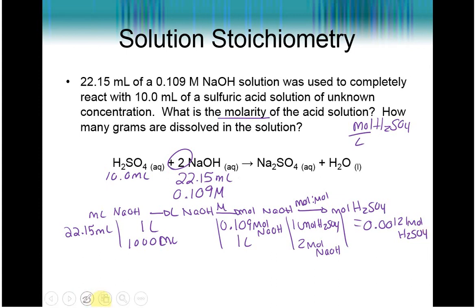Now, to change this to molarity, all we have to do is divide by liters. We know that we have 10 milliliters dividing by a thousand gives us 0.0100 liters of solution. So we can divide by the liters to get our molarity, and it comes out to being 0.121 molar H2SO4.